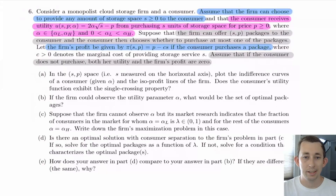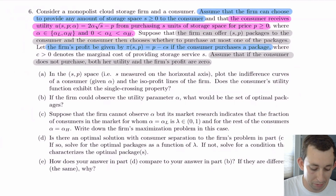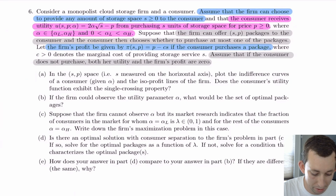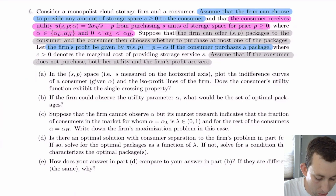Here is the problem we're facing today. We've got a monopolist cloud storage firm, and this firm can choose to write any amount of storage — we'll call that S, where S ≥ 0. The consumer gets utility equal to 2α√S minus price P, where P ≥ 0. This alpha parameter can take on exactly two values: a low value or a high value, where α_L < α_H.